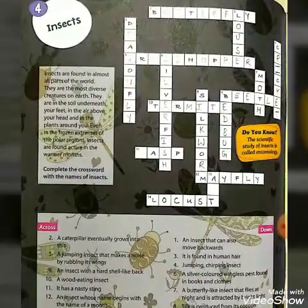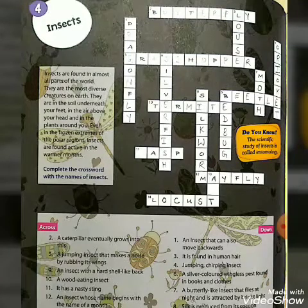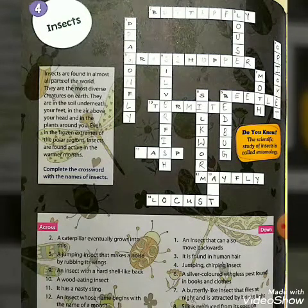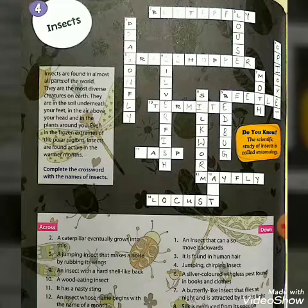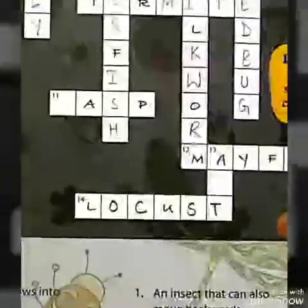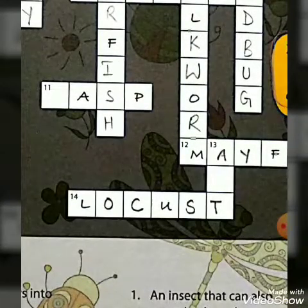Eleventh one. An insect that has a nasty sting and bad smell. You can see on the across side — your answer is wasp. W-A-S-P.